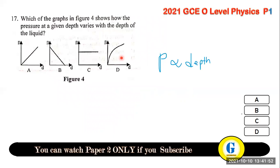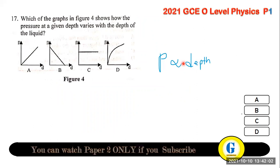Question 17: how does pressure at a given depth vary in a liquid? Pressure is directly proportional to depth — so it is a straight line graph showing direct proportion.